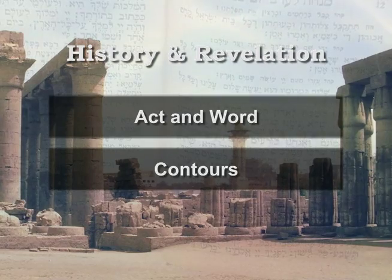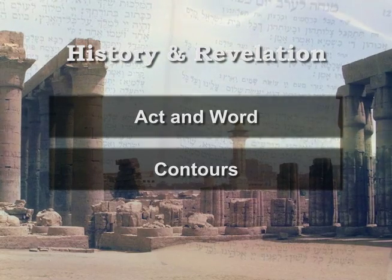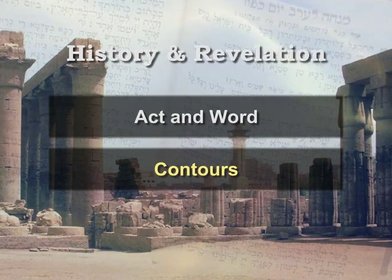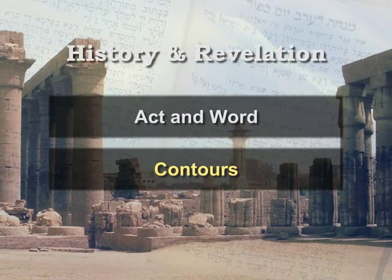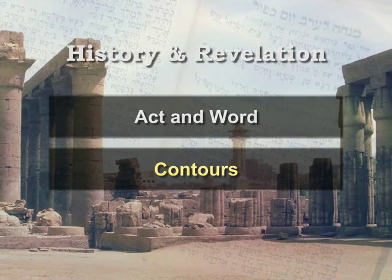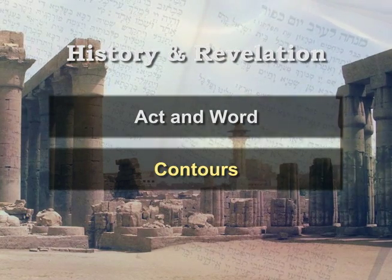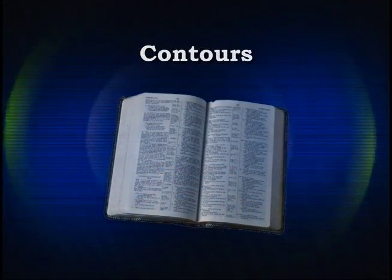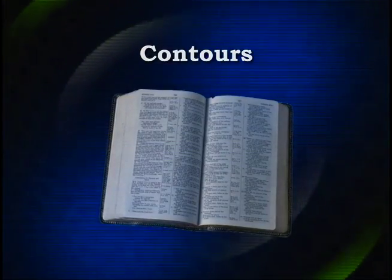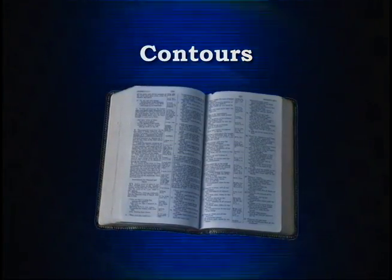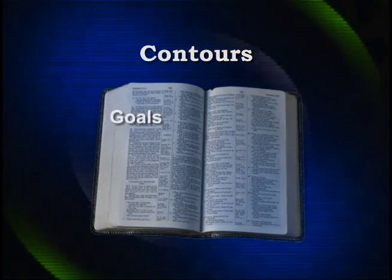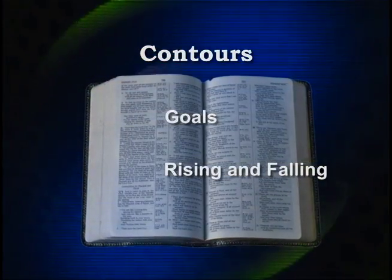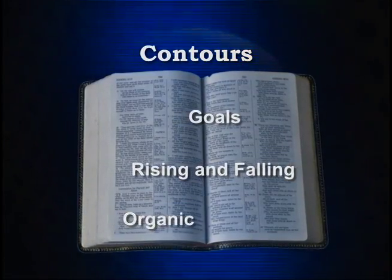Having seen that biblical theology stresses how history and revelation are interconnected in the Scriptures, we need to turn to a second issue — the contours of history and revelation in the Bible. The Bible mentions hundreds of thousands of events over thousands of years, and one of the tasks of biblical theology is to discern patterns and contours among these numerous events. To explore this, we will touch on three issues: the goal of God's revelation in the history of Scripture, the rising and falling of revelation in Scripture, and the organic development of revelation in Scripture.